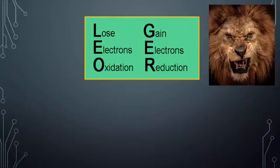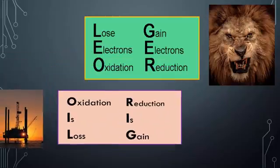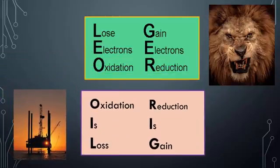Some phonetics that you definitely need to know: one of the main ones is LEO says GER. You should probably write this down somewhere in your reference table or with the periodic table. When you lose electrons, you're being oxidized; if you gain electrons, you are being reduced. Another one you can use is OIL RIG — oxidation is loss of electrons, and reduction is gain of electrons. They both mean the same thing; pick which one you like and use that.